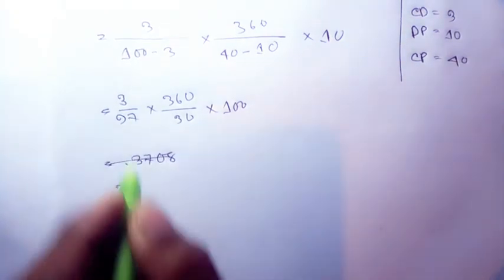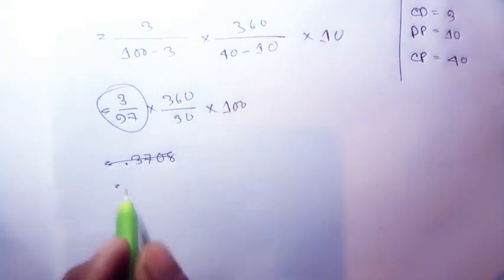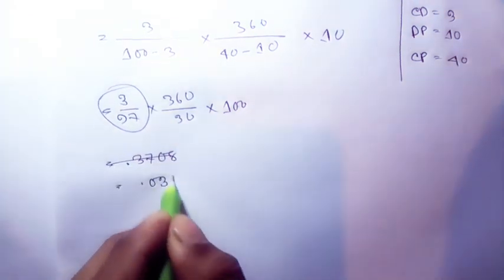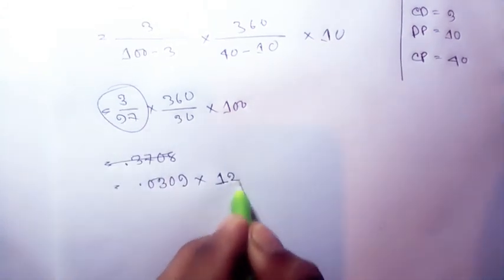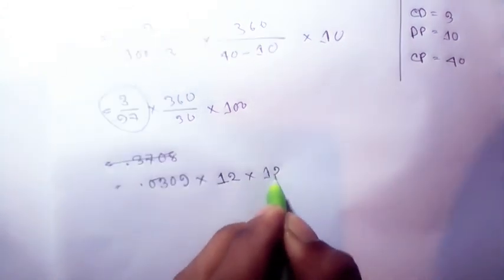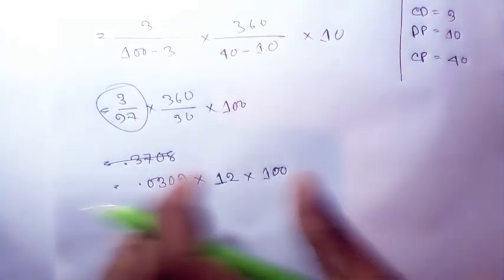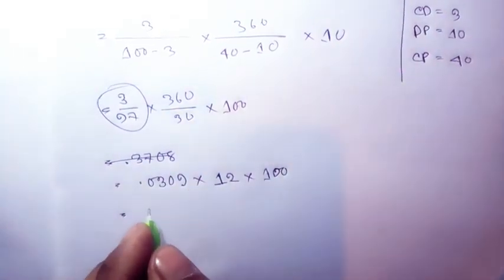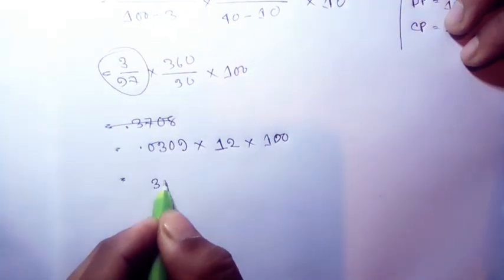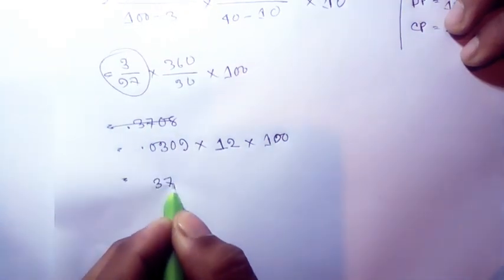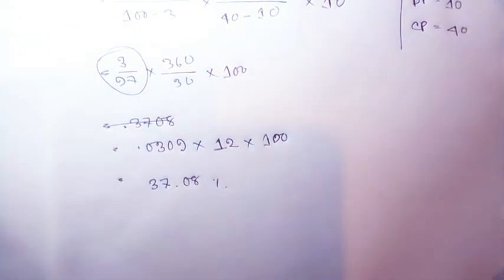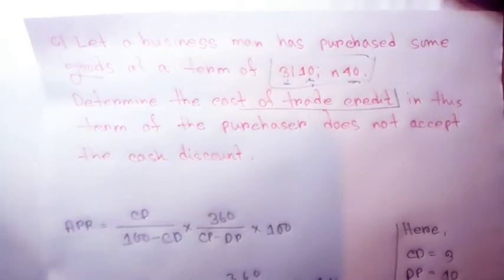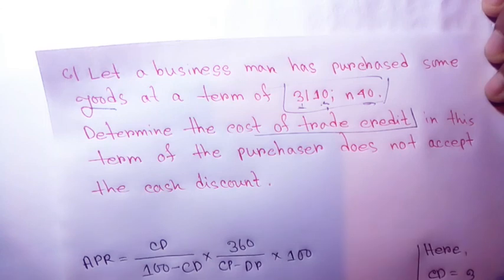The calculation gives us 0.0309 multiplied by 12, which equals approximately 37.08 percent. So the cost of trade credit is 37.08 percent. Please see the next video tutorial for more. Thank you.